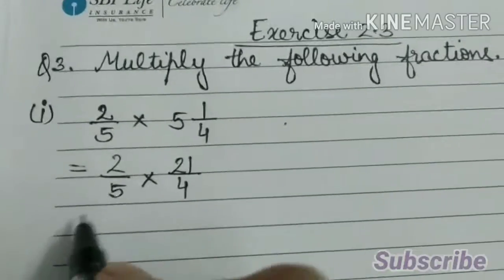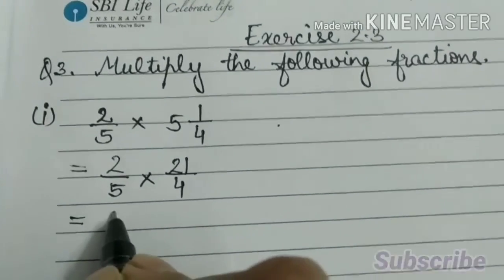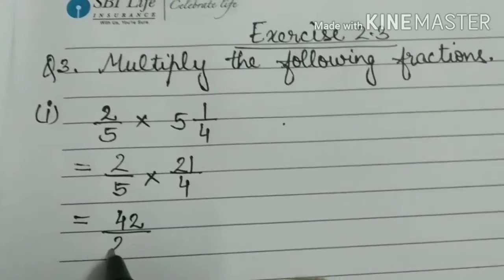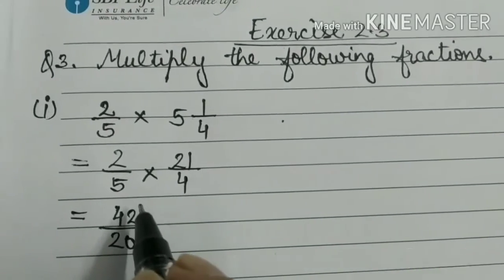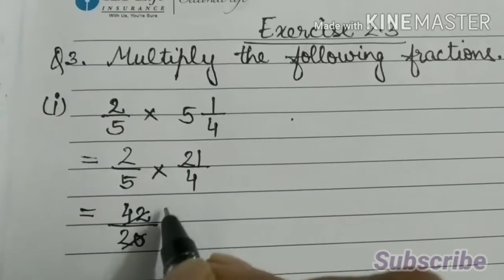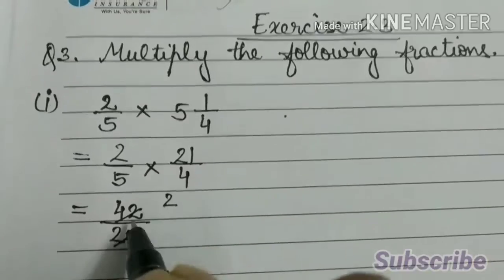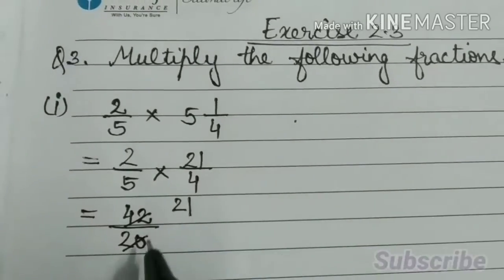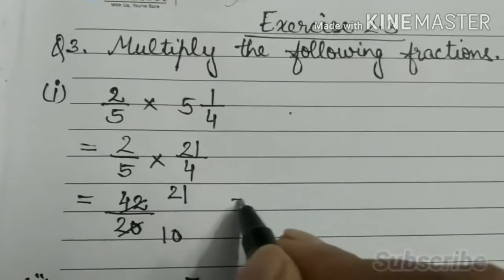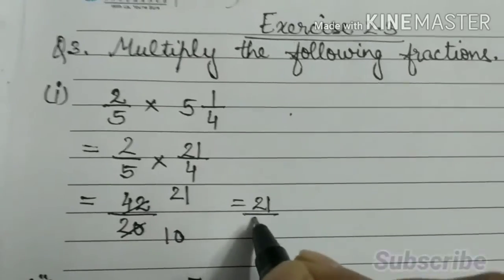That is equal to 2 into 21, that is 42 by 20. So we can divide these 2 numbers by 2. 2 2s are 4, 2 1s are 2, here 10. So answer is 21 by 10.